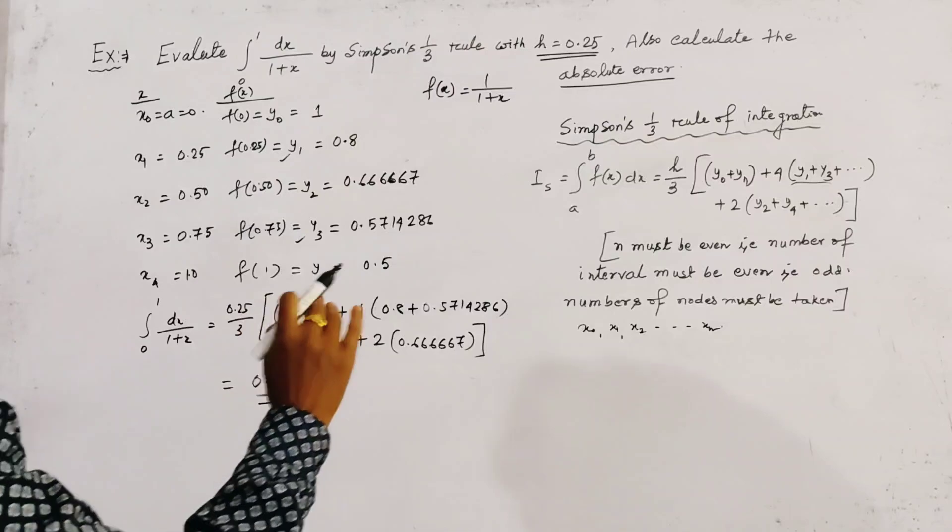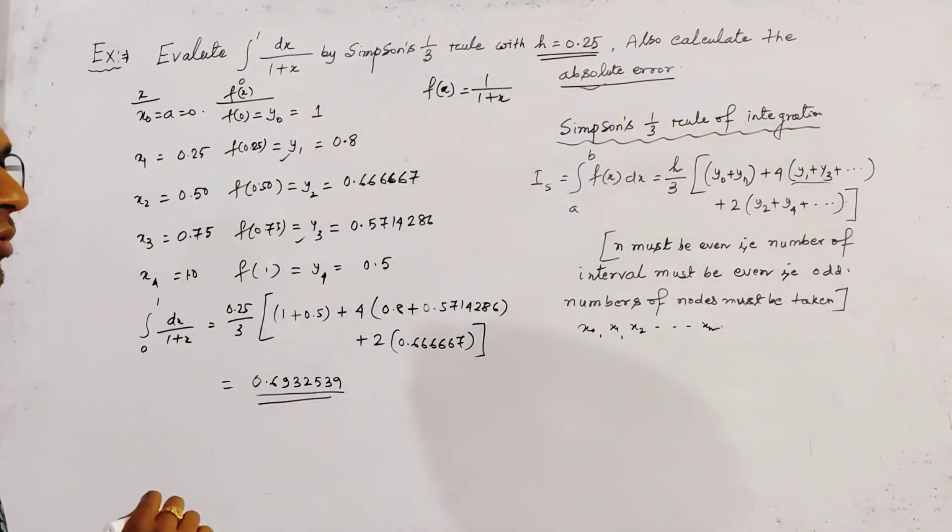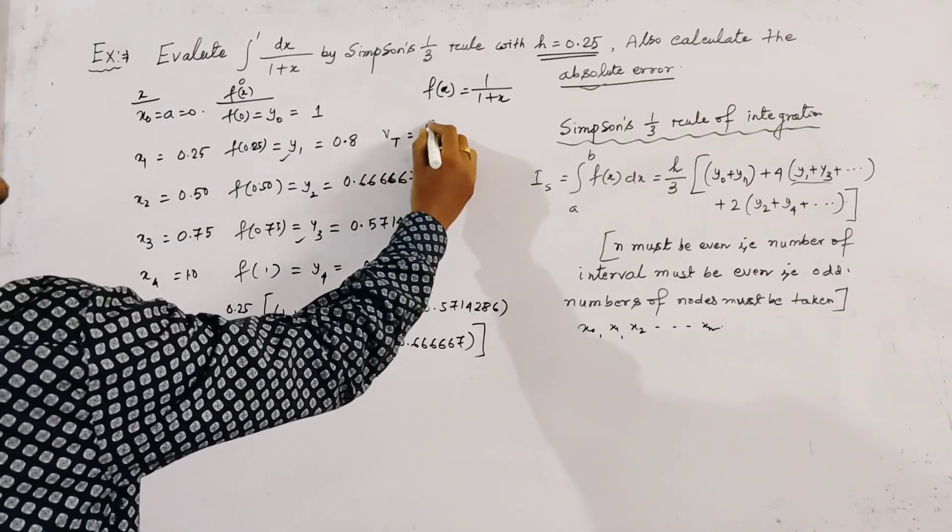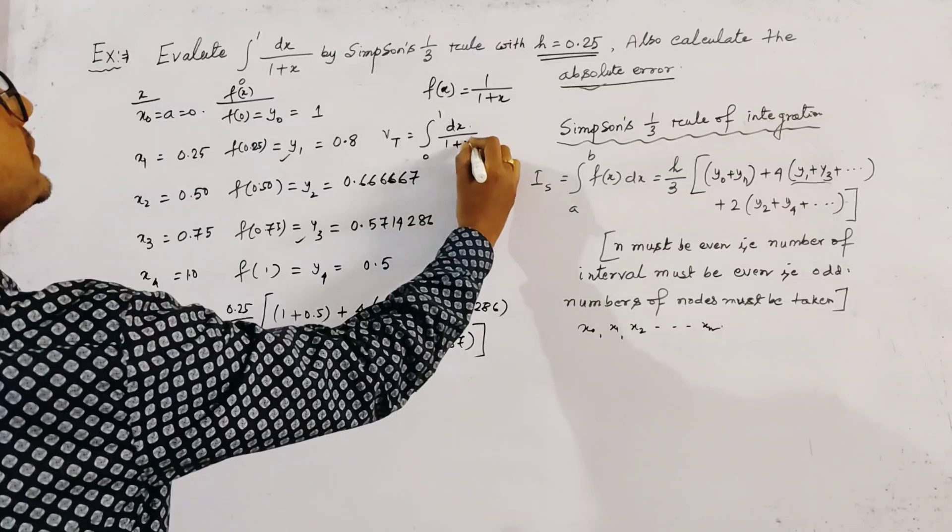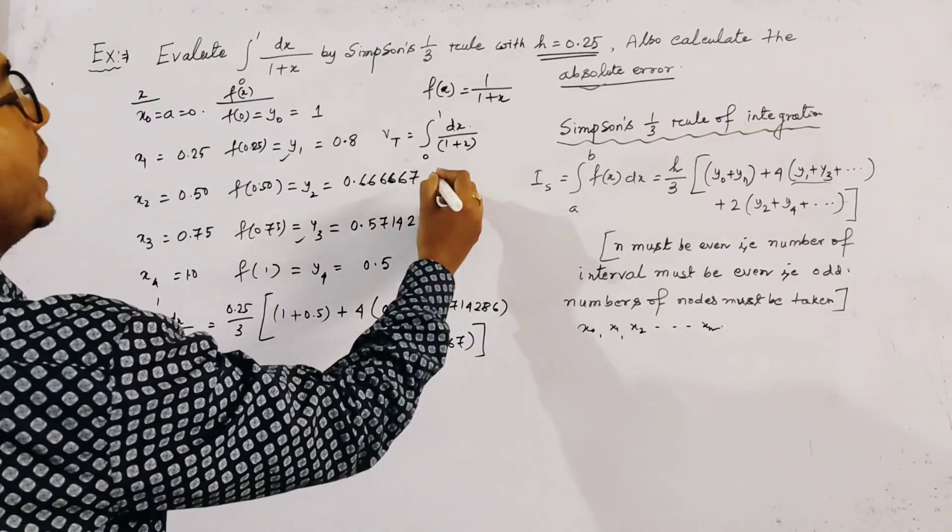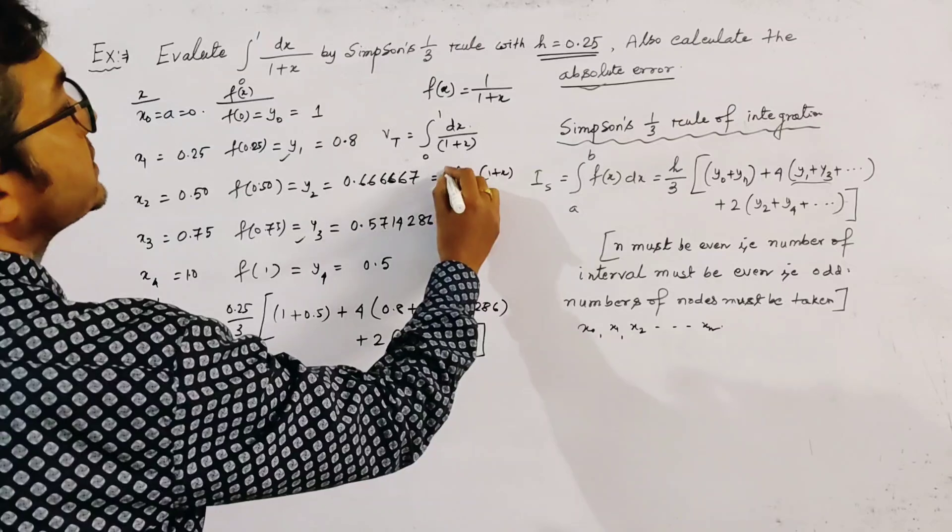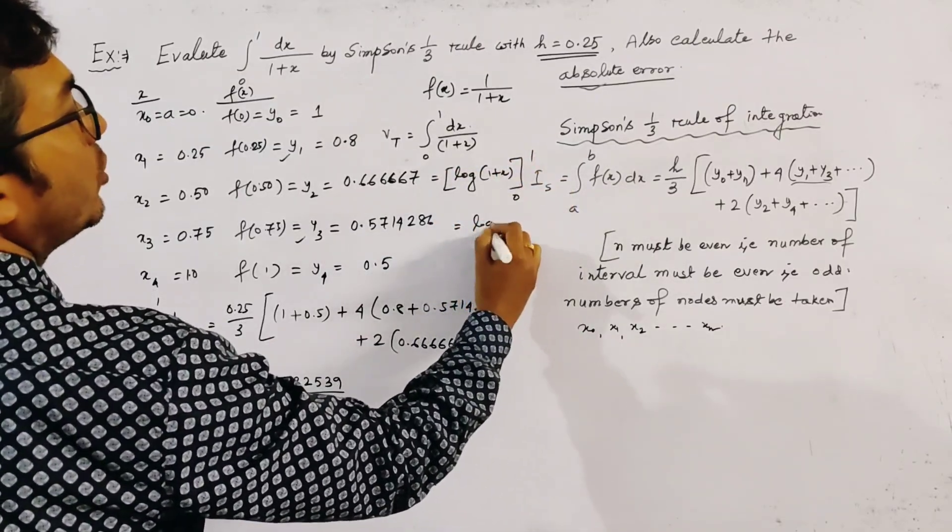Now to evaluate absolute error, we have to find the exact value. The true value VT is given by the integral from 0 to 1 of dx/(1+x), which equals log(1+x) evaluated from 0 to 1, so we get log 2 minus log 1, which equals log 2.